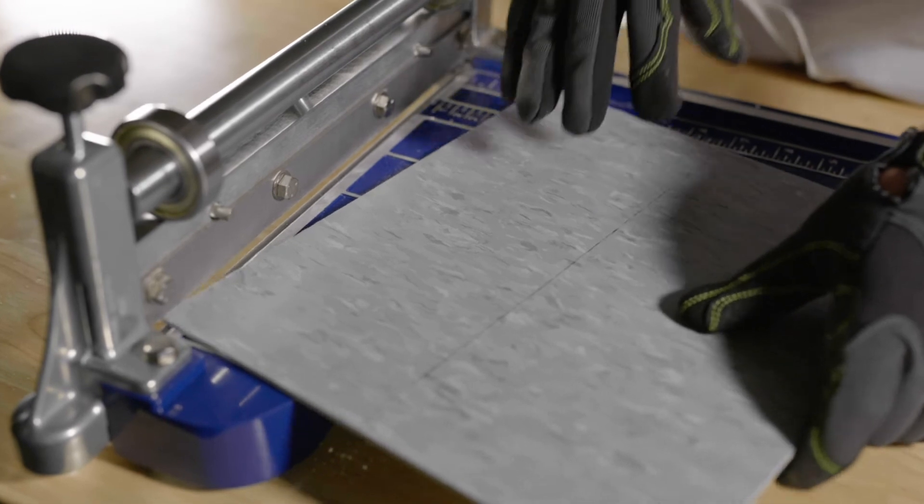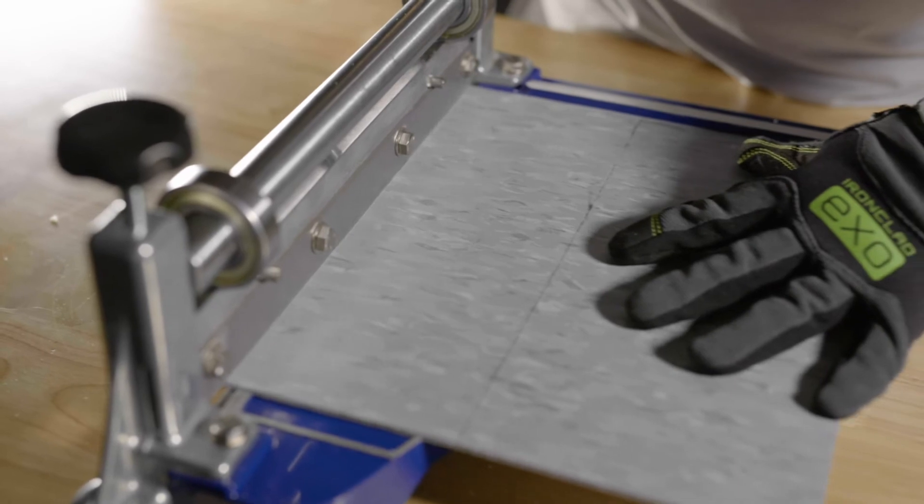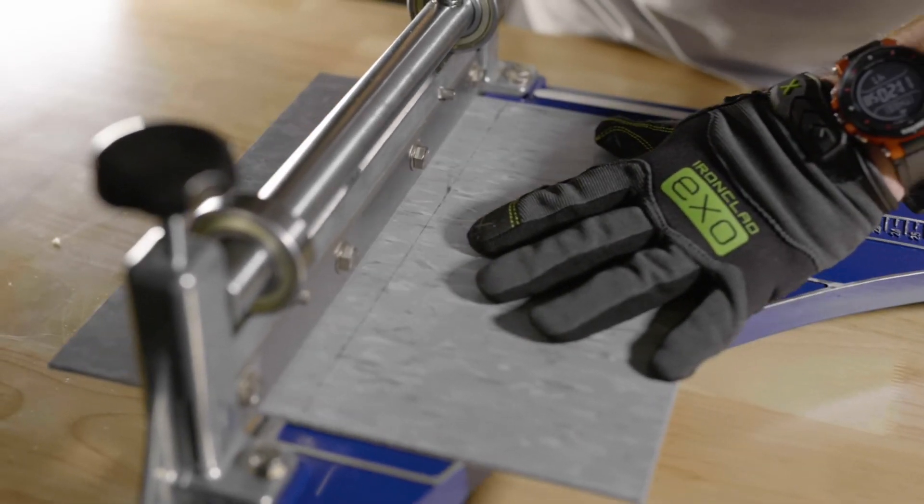Place your tile firmly against the guide bar on the right side. For really precise cuts, scribe a line on the tile and position the tile under the blade.